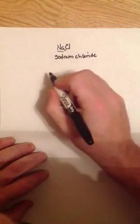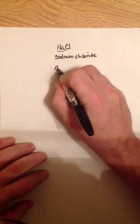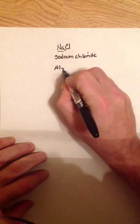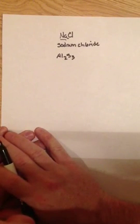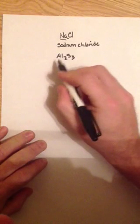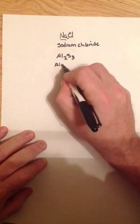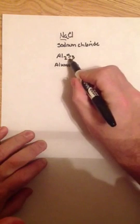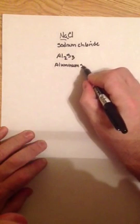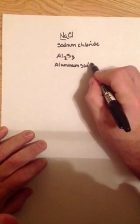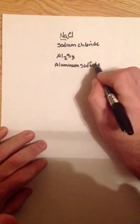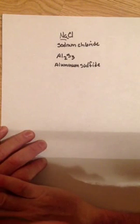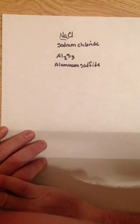If we try something different like Al2S3, well the name of this compound is very simple because Al is the aluminum ion and S is the sulfide anion. So the name of this compound is aluminum sulfide.